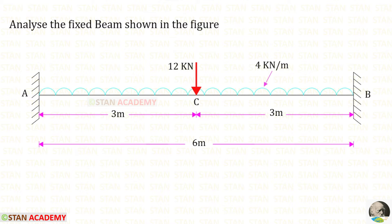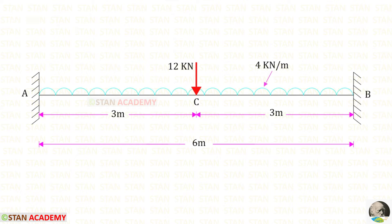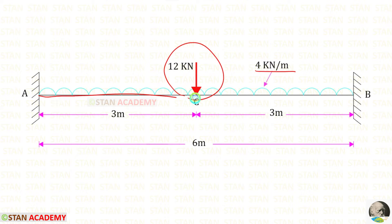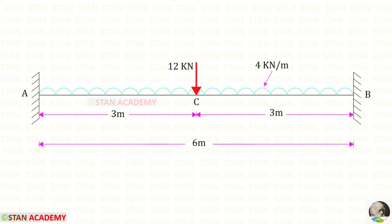Hello everyone, today we are going to analyze this fixed beam. In this beam we have two loads: one point load of 12 kilo newton at the center, and a uniformly distributed load of 4 kilo newton per meter acting for the whole span. The length of the beam is 6 meters.